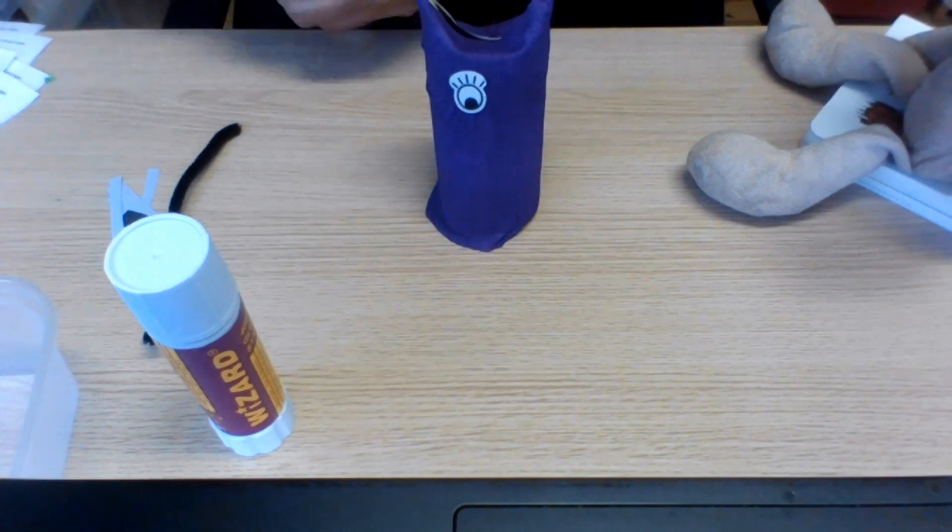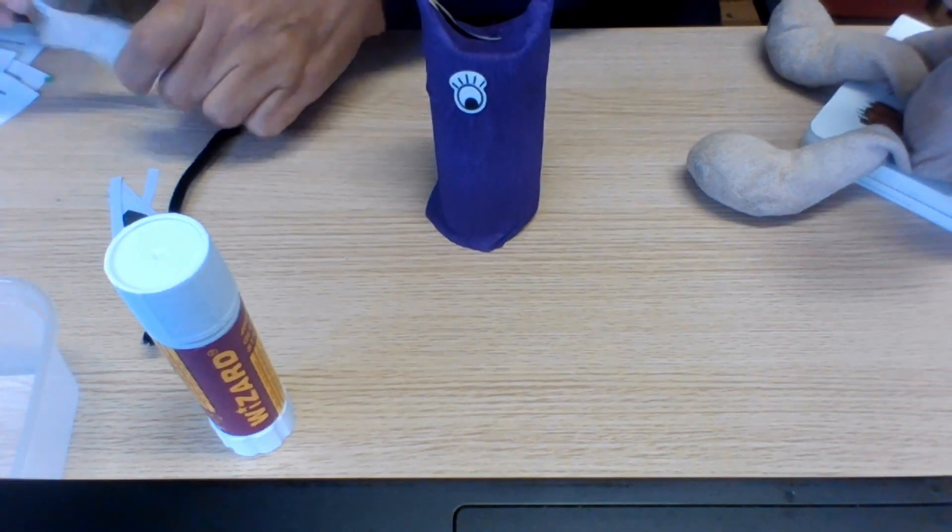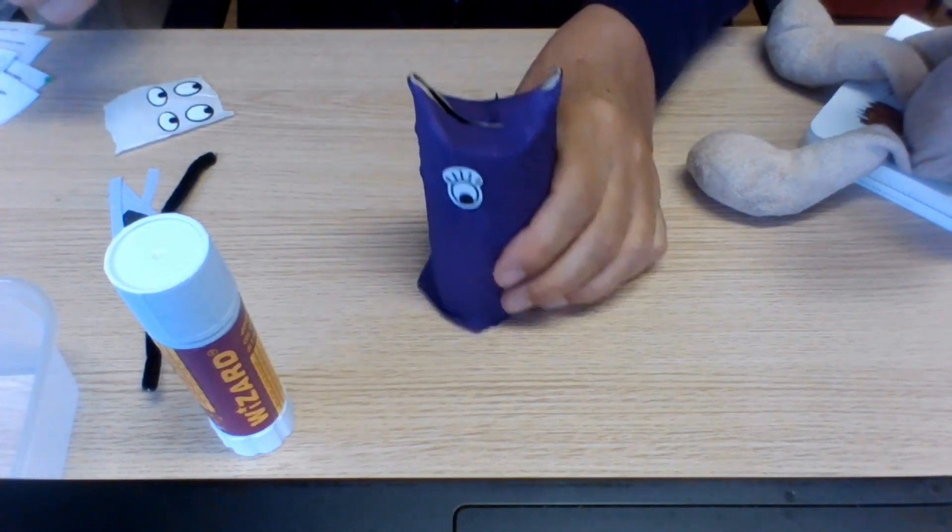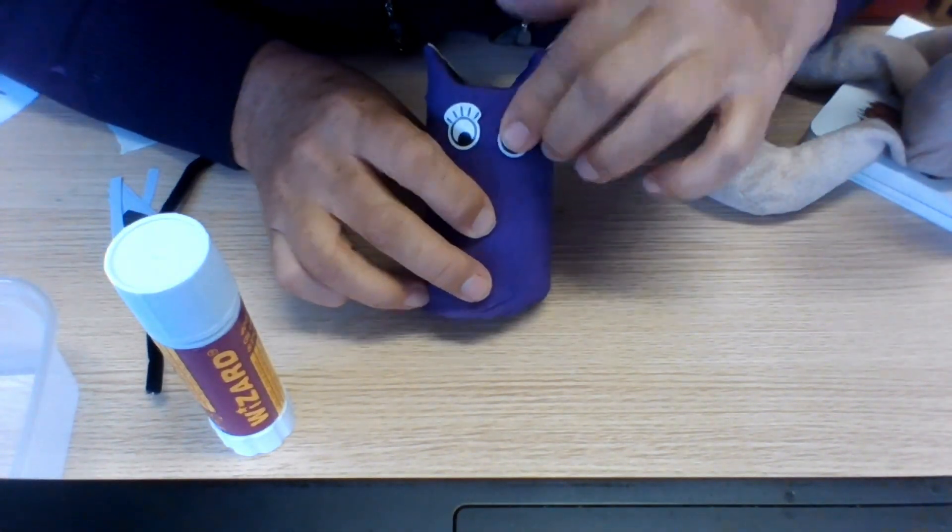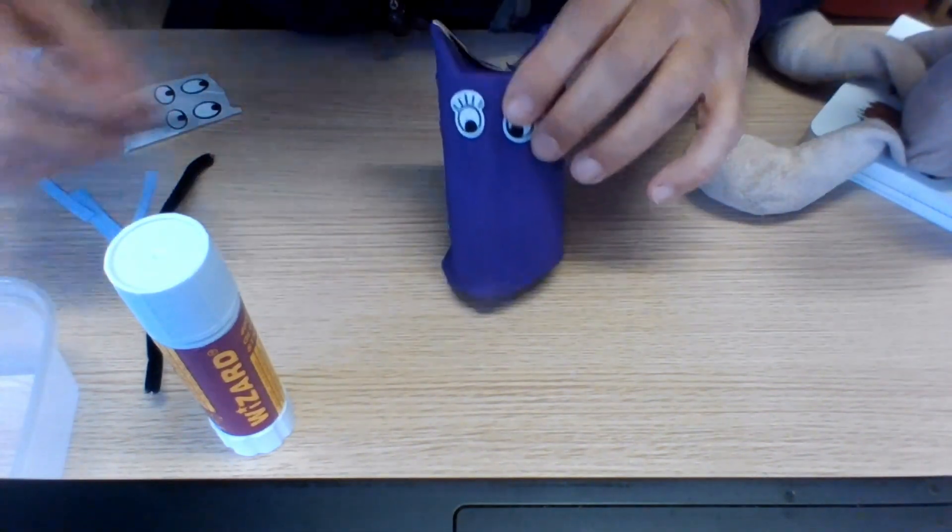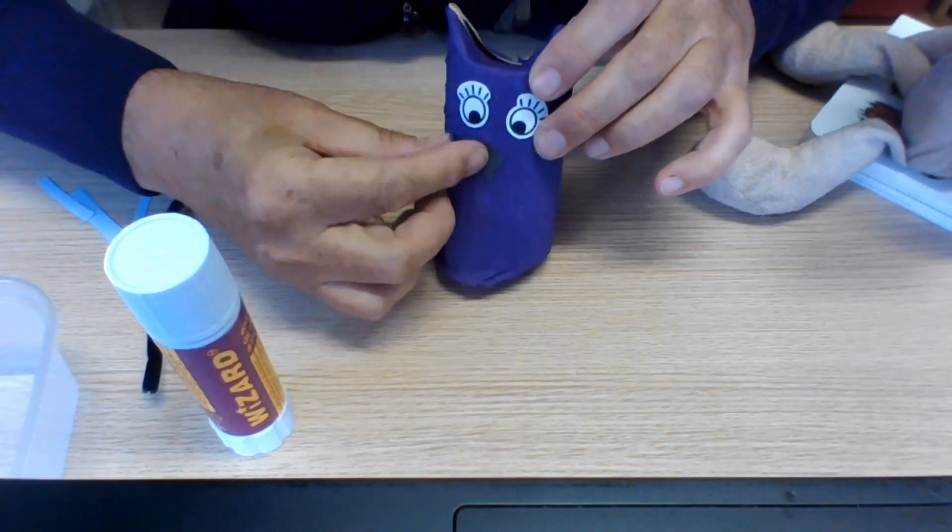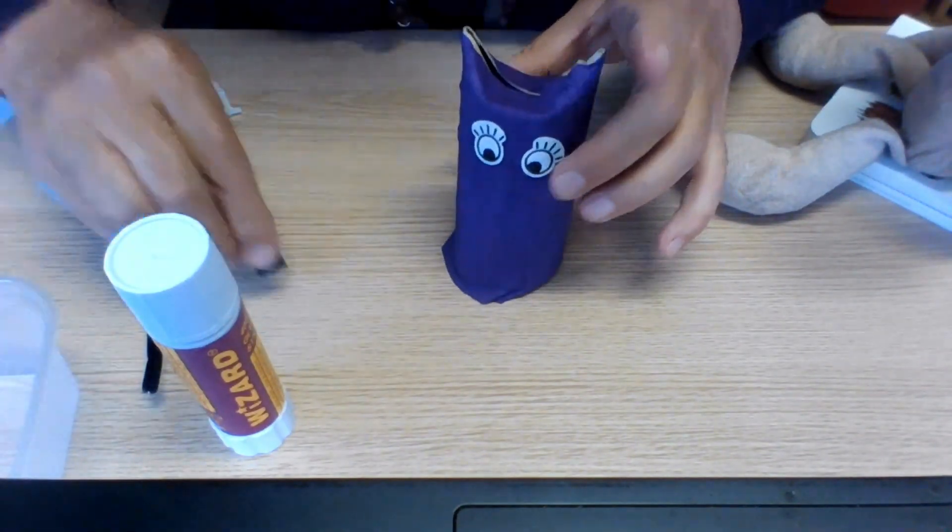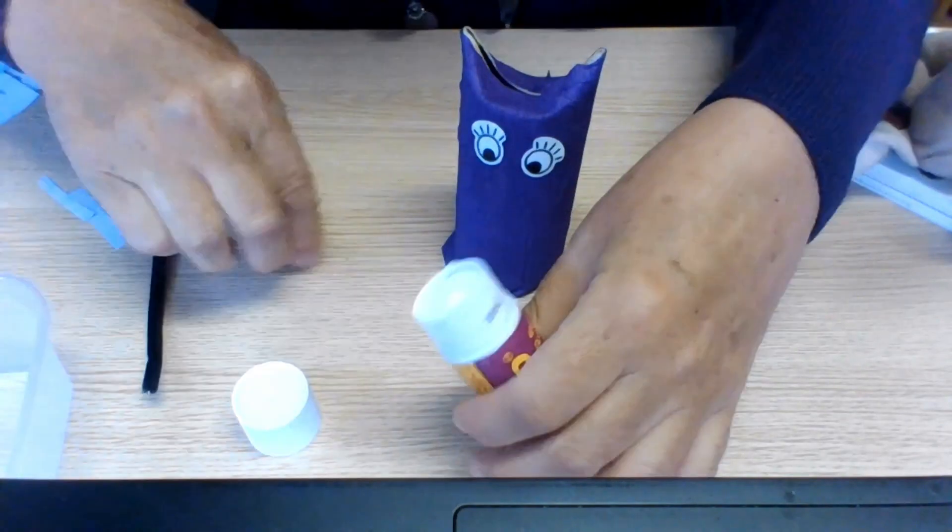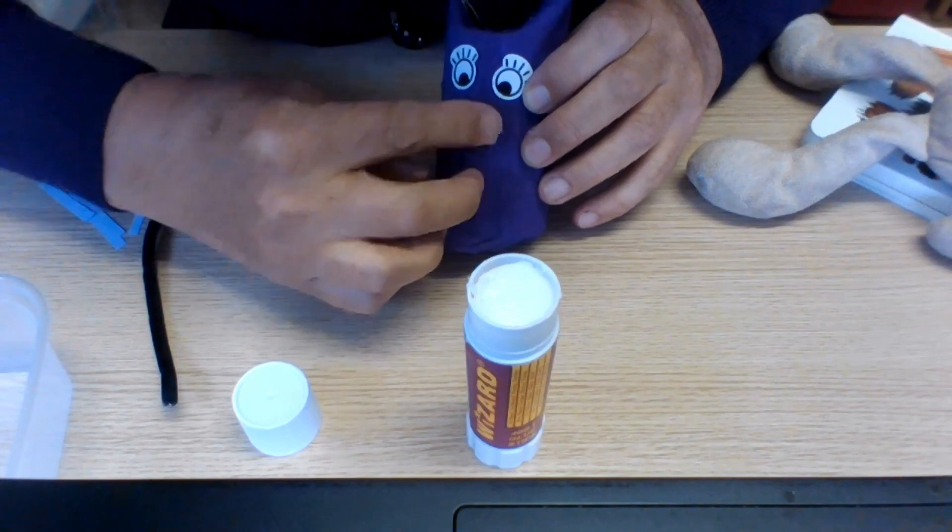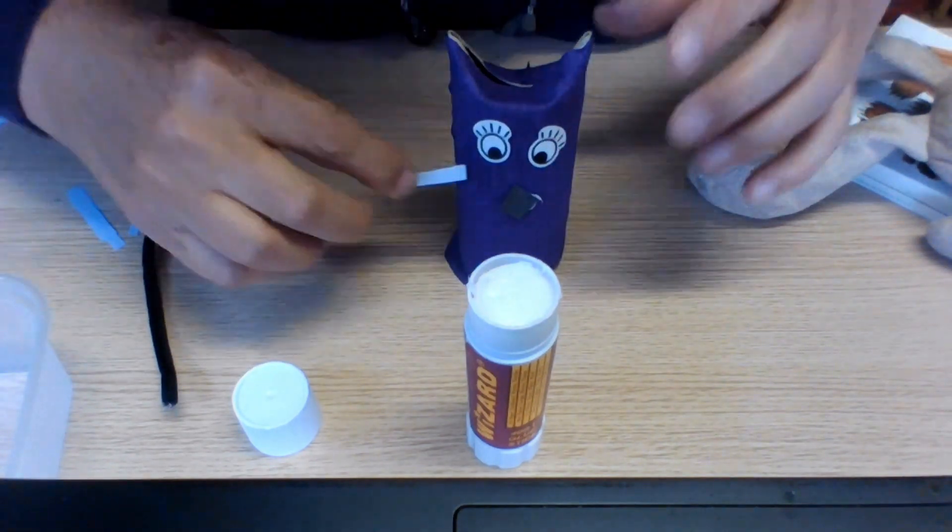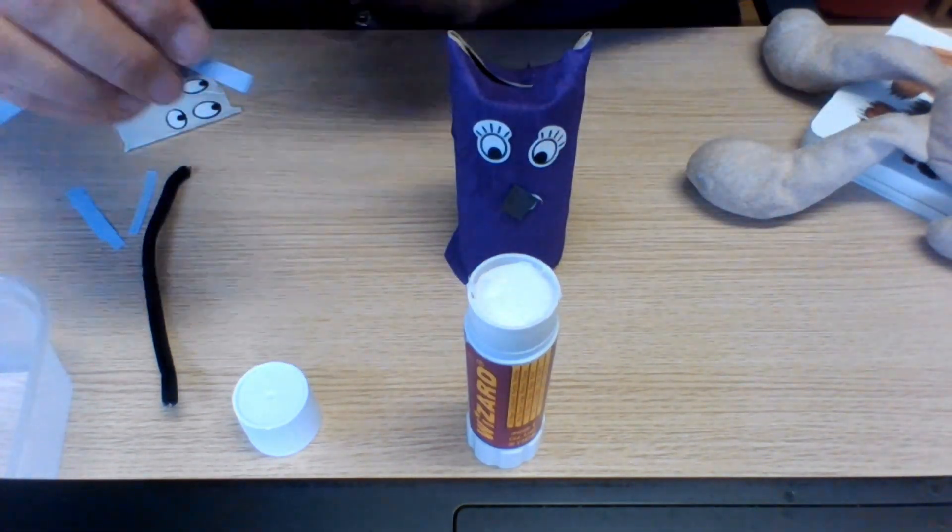So we'll get two eyes and our purple cat is going to have bright eyes. Can you see the cat coming? There's his ears, look, and here are his eyes. And I've cut out a little nose for my little cat, so that means I've got to take the lid off again and I'm going to put the nose here.